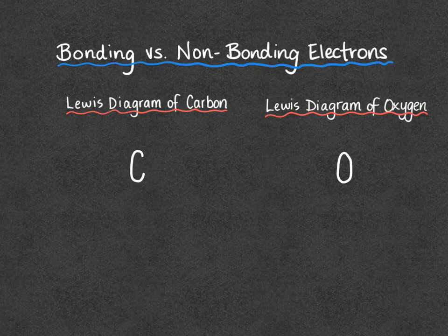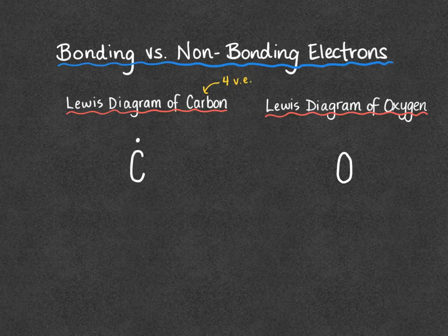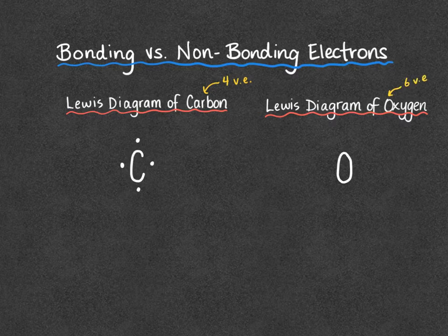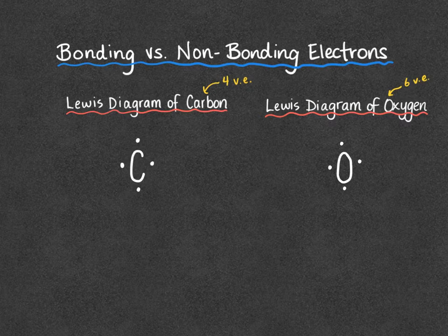We're going to start with carbon. As a reminder, carbon is in group 14, so it's going to have four valence electrons. When we draw this Lewis diagram, we start with one electron on the top and then rotate either clockwise or counter-clockwise until we've drawn all of our needed electrons. So our Lewis diagram for carbon has four electrons, one on each side of that element symbol. Oxygen is in group 16, so it has six valence electrons. We do the same process starting at the top and going clockwise. Once we have four, we've filled in all sides, so we start doubling up — two electrons on the top and two on the side.